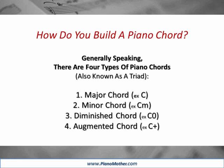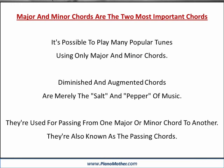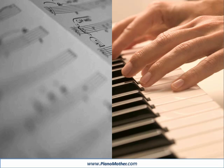How do you build a piano chord? Generally speaking, there are four types of piano chords, also known as a triad: 1. Major Chord, 2. Minor Chord, 3. Diminished Chord, 4. Augmented Chord. Major and minor chords are the two most important chords. It's possible to play many popular tunes using only major and minor chords. Diminished and augmented chords are merely the salt and pepper of music. They're used for passing from one major or minor chord to another, and are also known as the passing chords.